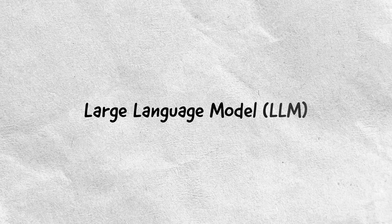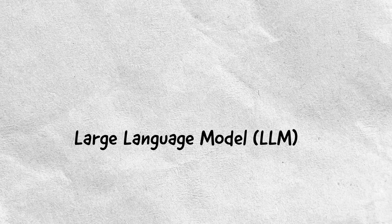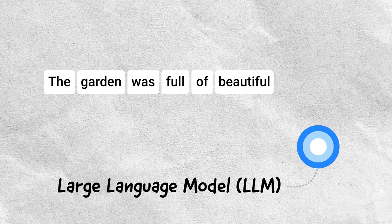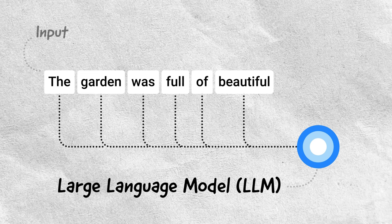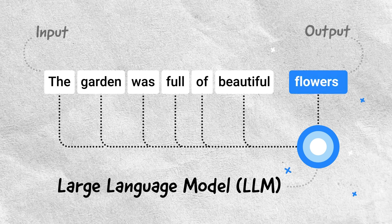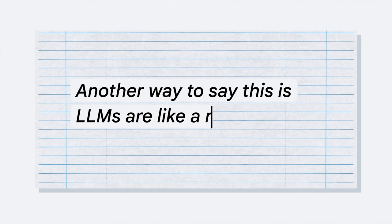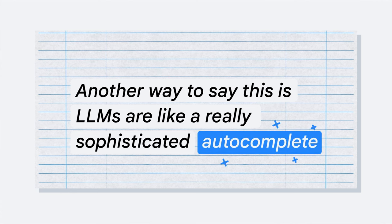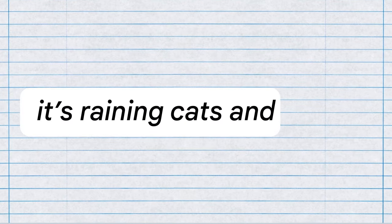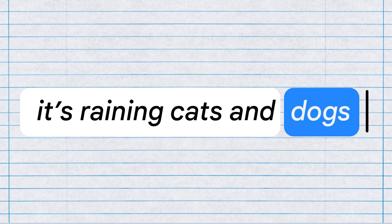So how do you actually use an LLM? LLMs learn about patterns in language from the massive amounts of text data they're trained on. Then they take some text as input and produce output text that's likely to follow. Another way to say this is that LLMs are like really sophisticated autocomplete. For example, if we give an LLM the input 'It's raining cats and…' it'll probably predict that 'dogs' is the most likely word to follow. This might not seem that exciting, but we can actually use this autocomplete-like functionality to solve tons of tasks just by writing strategic text input.